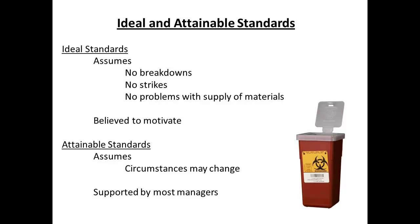Managers are aware there is a distinction between ideal standards and attainable standards, and will need to determine which to use. Ideal standards are those which assume there will be no change in circumstances, and can include costs based on no strike action or labour disruption, no breakdown of equipment, and no problems with supply of raw materials. Whilst such standards are believed to motivate, a downside is that they are unlikely to be reached. For this reason, most managers prefer to set out attainable standards. These assume it is possible for circumstances to change, and there will be allowances for time lost for maintenance and machine breakdown.